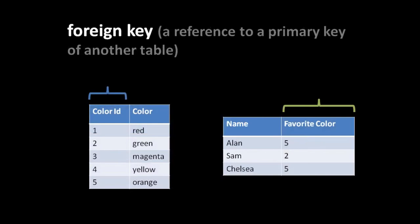A foreign key is simply a reference to a primary key of another table. For example, we have a colors table and a people table. The colors table has an ID column designated as its primary key - these values are generally auto-generated by the database. The people table has a name column and a favorite color column, which is a foreign key - it references the primary ID of the colors table. So if the person Alan's favorite color column has the value for orange, and Chelsea's also shows orange, while Sam's shows the ID for green.